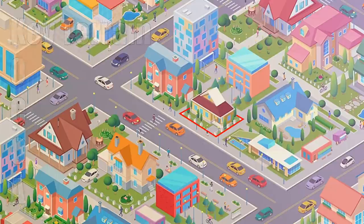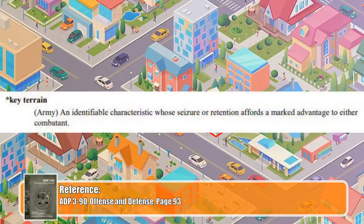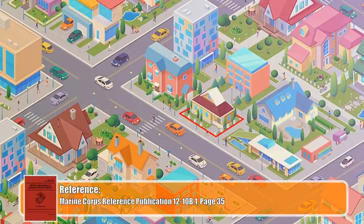Whipping out yet another publication, ADP 3-90, we can define key terrain as an identifiable characteristic whose seizure or retention affords a marked advantage to either combatant. The classic examples of key terrain include things like airports, stadiums, parks, sports fields, schools, public buildings, road junctions, bridges, industrial facilities, railways, power substations, and so much more.